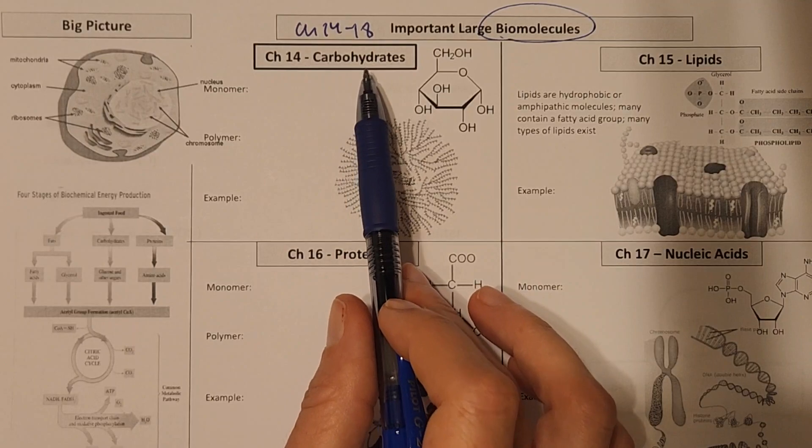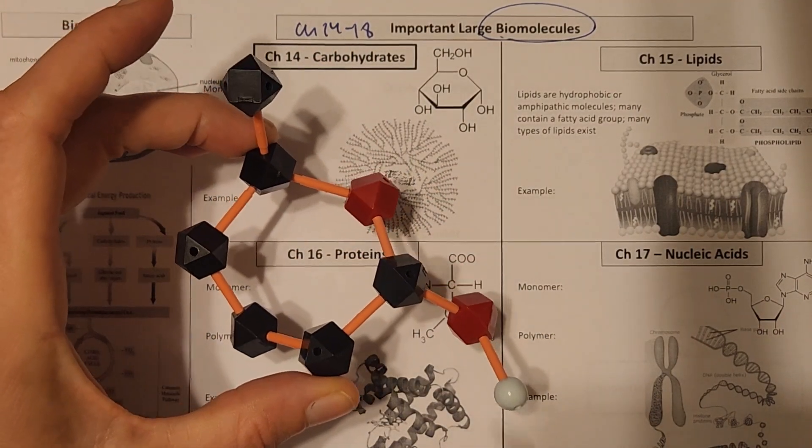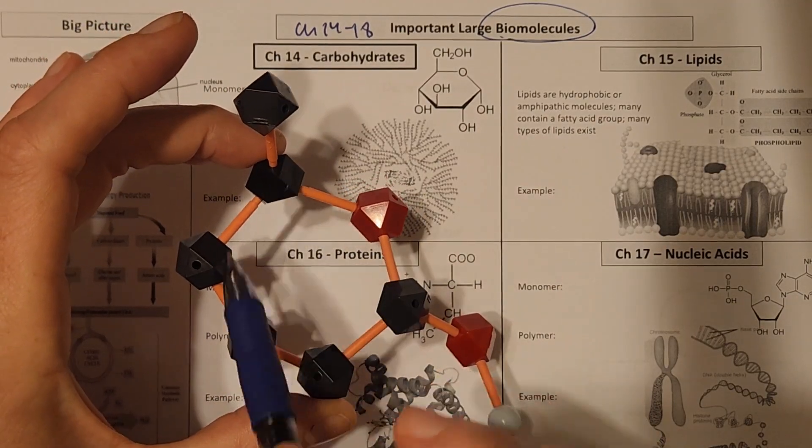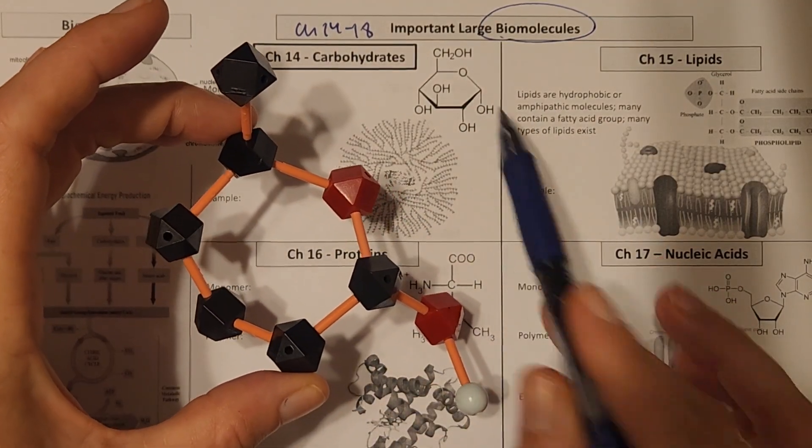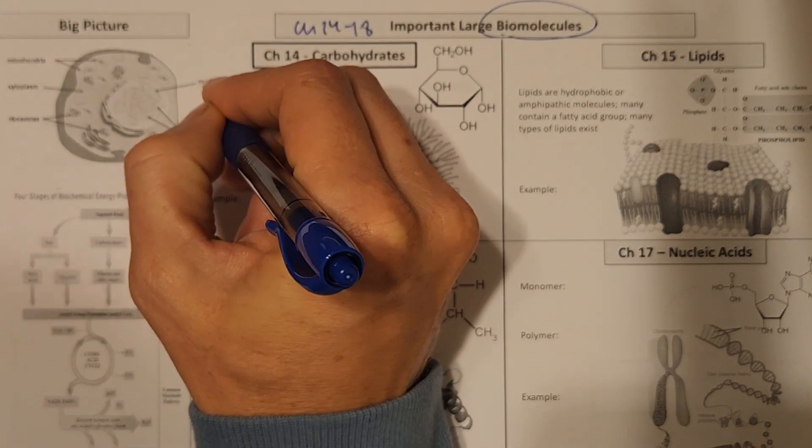So when we talk about carbohydrates, we're going to talk about these kind of large molecules that are in the shape of rings, have some carbons, have some oxygens, and this would be what we would call a monomer. So one piece that makes up a larger polymer.